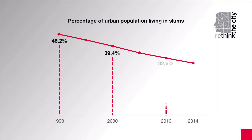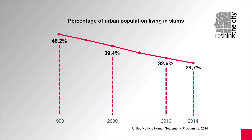Therefore, housing and urban policies and programs have heavily focused on slums upgrading and urban poverty reduction. The good news is that the percentage of urban population living in slums in the Global South has decreased from 46% in 1990 to 30% in 2014.